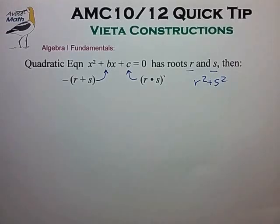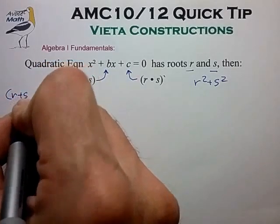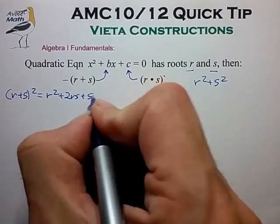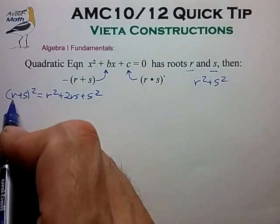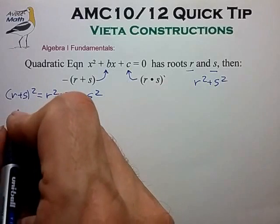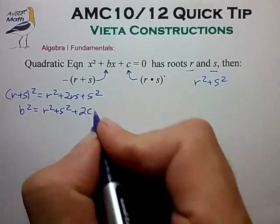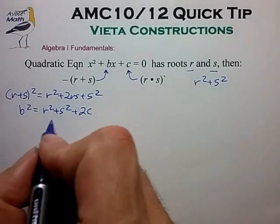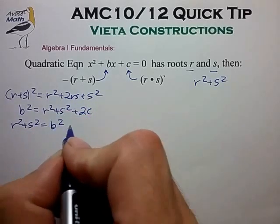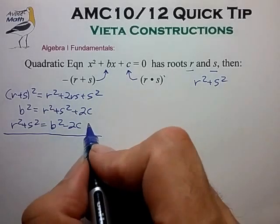The easiest way to compute r squared plus s squared is to look at the square of r plus s, and expand that into r squared plus 2rs plus s squared. We can now substitute r plus s for minus b, and 2rs for 2c, and we find that b squared equals r squared plus s squared plus 2c. Bringing the r squared plus s squared to one side, we find that r squared plus s squared equals b squared minus 2c. Pretty simple result, and one that's easy to derive.